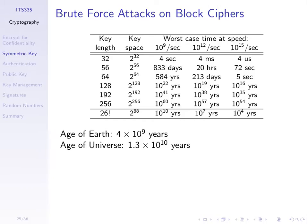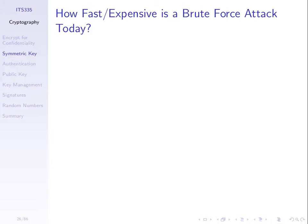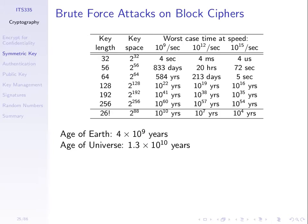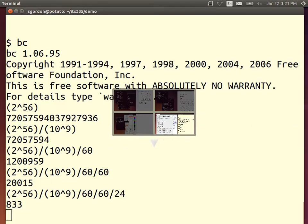Brute force is easy to prevent by just making the key long enough — generally 100 bits or longer. Nowadays people use 128 or even 256 bits commonly. Most algorithms are slower with longer keys, so that's the trade-off: more secure but slower to encrypt.